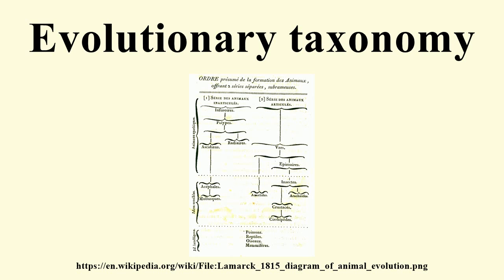Terminological difference. The two approaches — evolutionary taxonomy and the phylogenetic systematics derived from Willy Hennig — differ in the use of the word monophyletic. For evolutionary systematicists, monophyletic means only that a group is derived from a single common ancestor. In phylogenetic nomenclature, there is an added caveat that the ancestral species and all descendants should be included in the group. The term holophyletic has been proposed for the latter meaning.